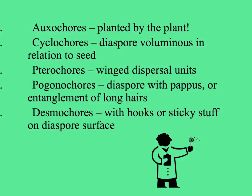First are the oxacores, planted by the plants themselves. Often the flowering stalk will elongate and push the fruit under the ground. The cyclocores are things like tumbleweeds, where a plant grows up and then dies and rolls around in the wind, dropping seeds — so the diaspore is big in comparison to the seed. Teracores are winged seeds or fruits. Pogonocores have tufts of hair. Desmocores stick to fur or clothes with hooks or sticky mechanisms.